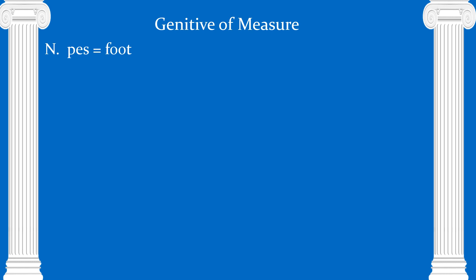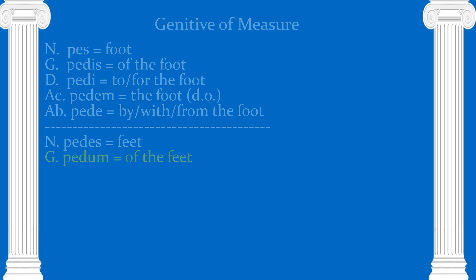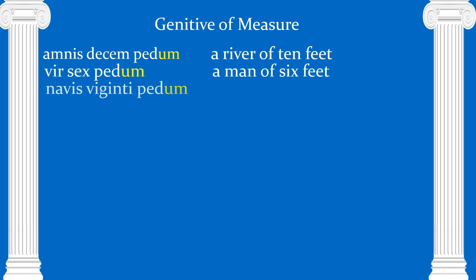Once we have our numbers learned, we go into the genitive of measure, which for our purposes is pretty easy because all we're going to do is use one unit of measurement: the foot. Measurement comes in the genitive case — we use the genitive plural for most of our examples. Pedum means 'of the feet' or 'of feet,' like 'a number of feet,' 'a number of miles.' We can hear the genitive even in the English.